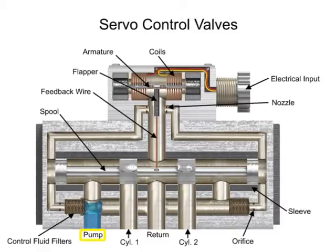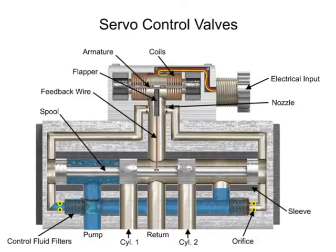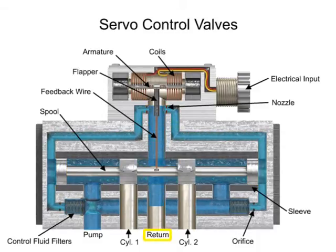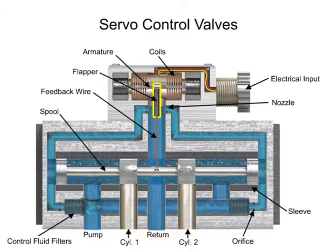Fluid from the pump inlet is tapped off through filter elements, passes through orifices past both ends of the spool, goes on to nozzles, and out to the return line. A feedback wire attached to the flapper terminates in a ball end that sits in a very close-fit slot in the spool.